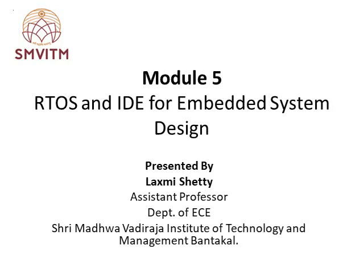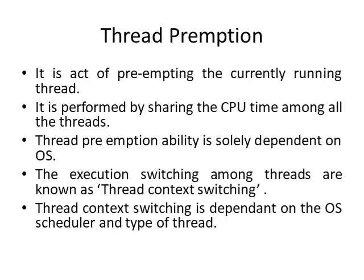Thread preemption is similar to process preemption. In threads, as in processes, it is the act of preempting the current running thread. If there are multiple threads, these multiple threads share the CPU time, and when the time slice is over, the currently running thread is preempted and execution is switched to another thread. The thread preemption ability is solely dependent on the OS.